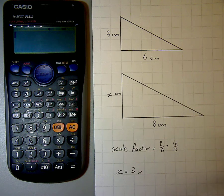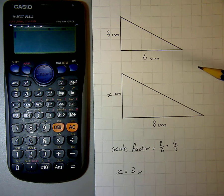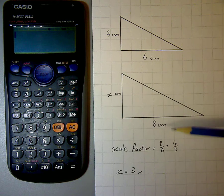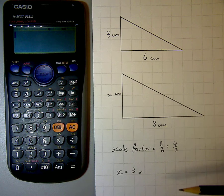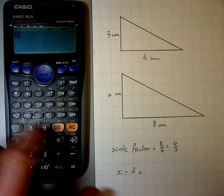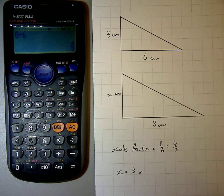Okay, so what people have been doing, which is rightly so, is saying the scale factor is the larger side divided by the smaller side. So 8 divided by 6 is 4 thirds. They're doing 8 divided by 6, the calculator gives you 4 thirds, and you can see.